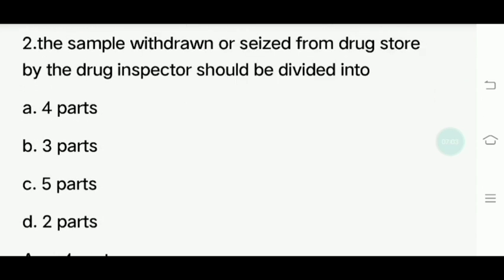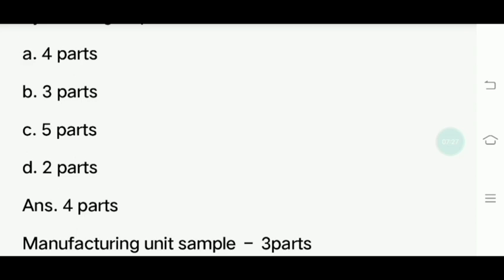Second question: The samples withdrawn or seized from a drug store by the drug inspector should be divided into how many parts? Options: four parts, five parts, three parts, two parts. Answer is four parts. For a manufacturing industry, it will be three parts.